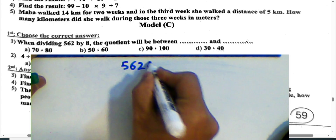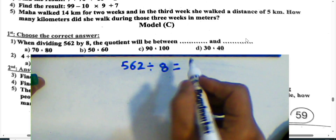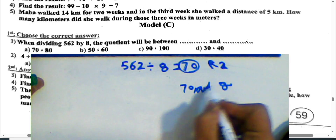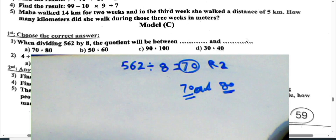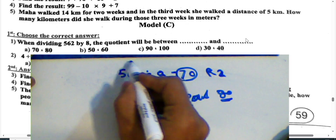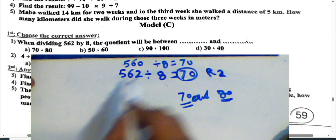Next question: When dividing 562 by 8, the quotient lies between 70 and 80. The last usable number is 560; 560 divided by 8 is 70. So the result lies between 70 and 80.